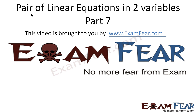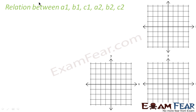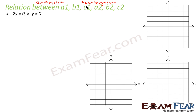Hello friends, this video on pair of linear equations in two variables part 7 is brought to you by examfear.com. Before watching this video, please make sure that you have watched part 1 to part 6. We know equations of the form a1x plus b1y plus c1 equals 0 and a2x plus b2y plus c2 equals 0 — two general forms. Now let's find the relationship between a1/a2, b1/b2, and c1/c2.